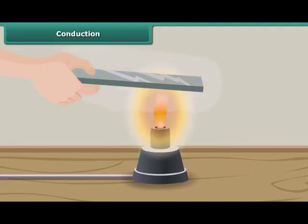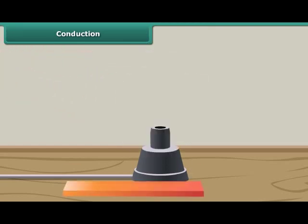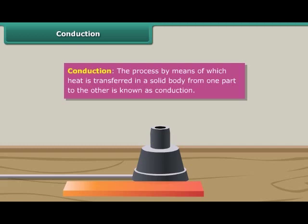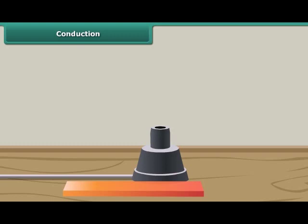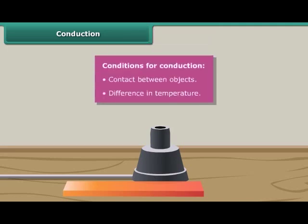Let us perform an experiment. Take a metal rod, hold one end and heat the other end. In the beginning, the end of the rod in the hand is not hot. However, very soon we find that the end becomes hot and we are not able to hold the rod any longer. The process by which heat is transferred in a solid body from one part to another is known as conduction. Conduction happens mainly in solids and is not possible in vacuum. Two important conditions for conduction are that the two objects should be in contact and their temperatures should be different.